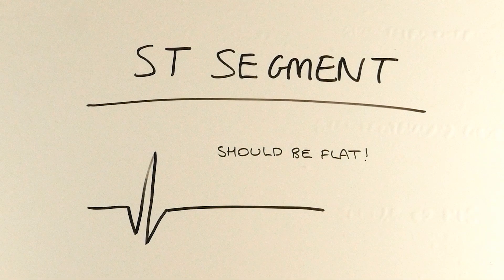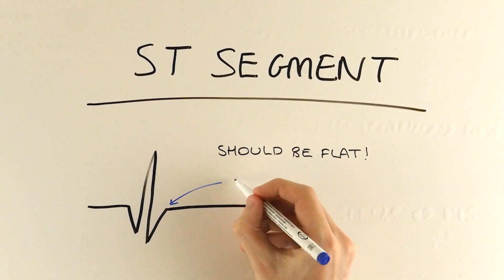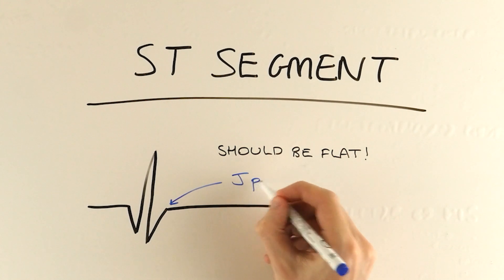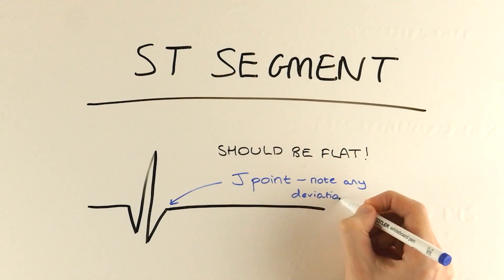The important thing is that when our S wave reaches the isoelectric line again, the line from which positive and negative changes are measured in the middle, this is the J point, and we use it to decide if there are any shape changes relative to here.